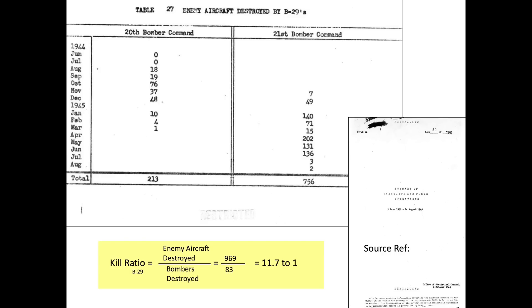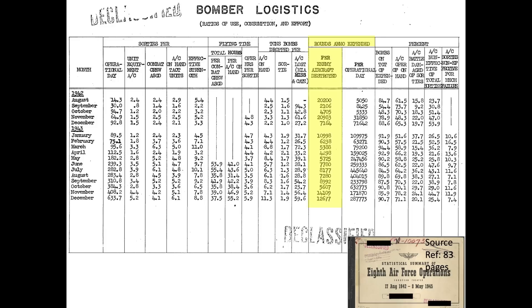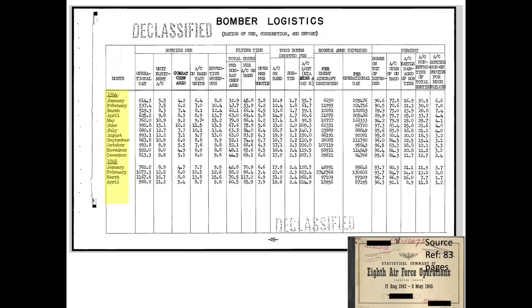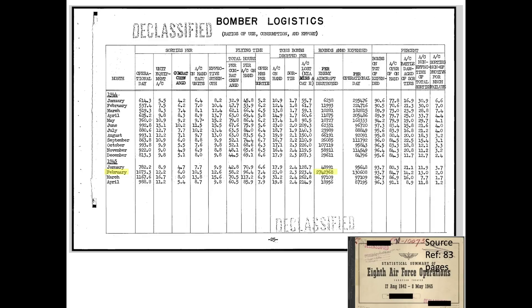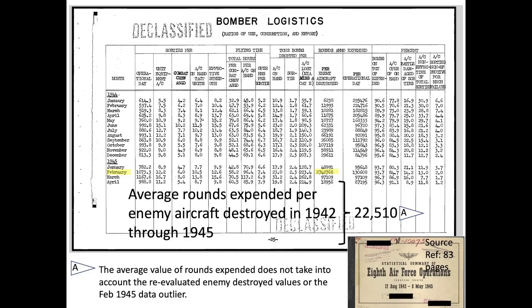The B-29's kill ratio is 14 times the B-17/B-24 kill ratio. Another consideration is the number of rounds fired to destroy an enemy aircraft. This declassified 1945 operations report documents the rounds of ammo expended per each enemy aircraft destroyed by bomber gunners. This page reflects data collected in 1942 and 1943; this page reflects data collected in 1944 and 1945. The values varied wildly from 2,106 in September 1942 to 2,742,000 in February 1945. The February 1945 value should be considered an outlier. On average, B-17 and B-24 gunners expended 22,510 rounds per each enemy aircraft destroyed, based on the average value of the database removing the February 1945 outlier.